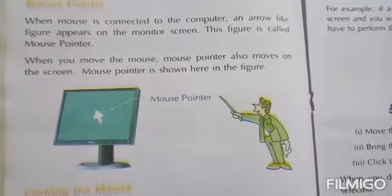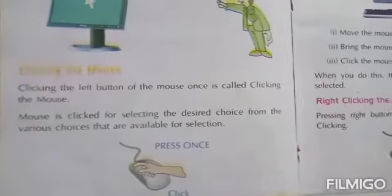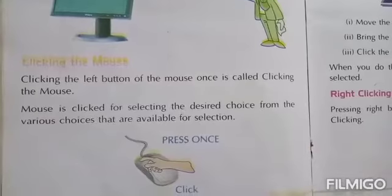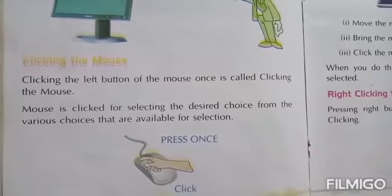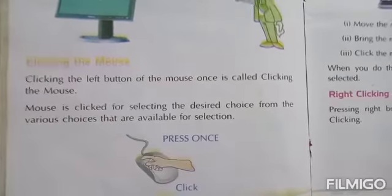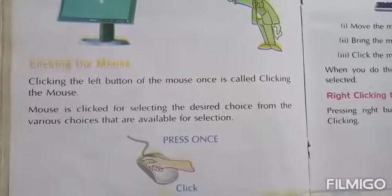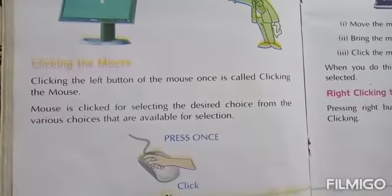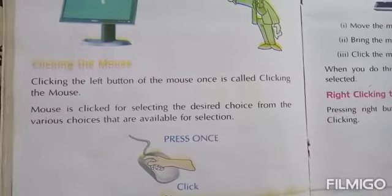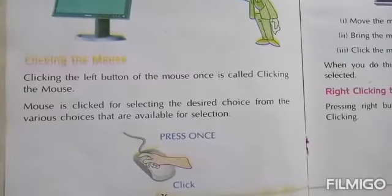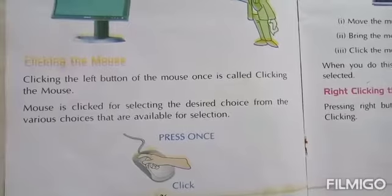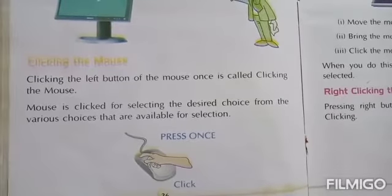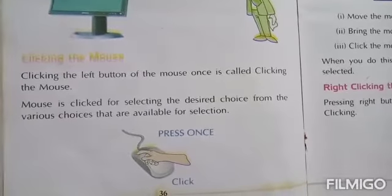Clicking the mouse: clicking the left button of the mouse is called clicking the mouse. The mouse is clicked for selecting the desired choice from the various choices that are available for selection.